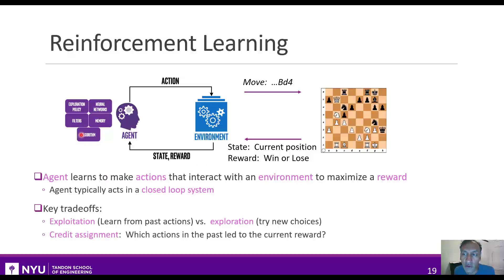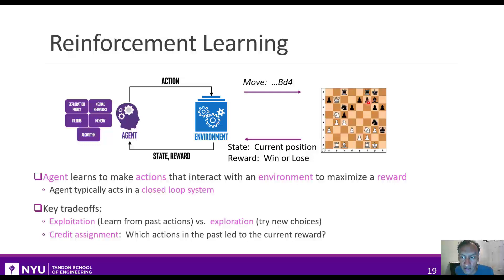Reinforcement learning has complexities not present in other types of machine learning. The first is the trade-off between exploitation — using what you've learned from past actions — and exploration, trying new actions whose outcome you don't know until you try them. A second challenging aspect is credit assignment: understanding which past actions led to the current reward. For instance, the computer only learns at the final checkmate whether it won, and must then go back over all moves to find out what caused it to win or lose and adapt for future games.